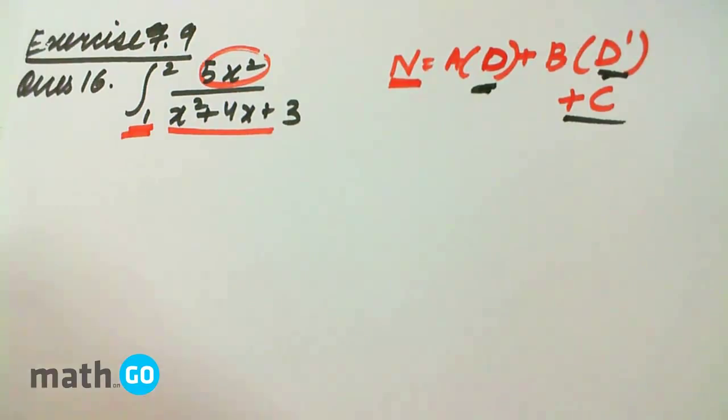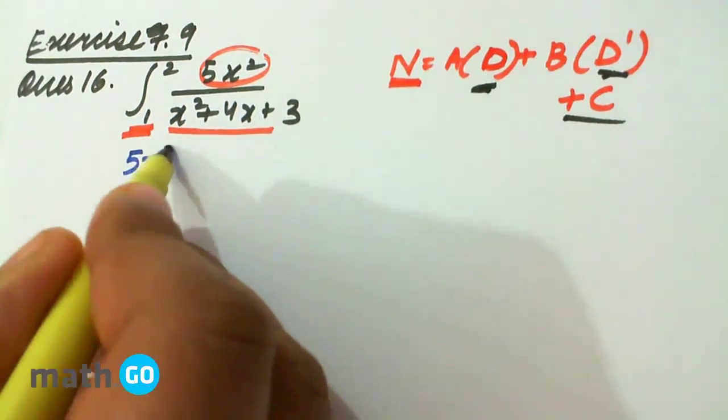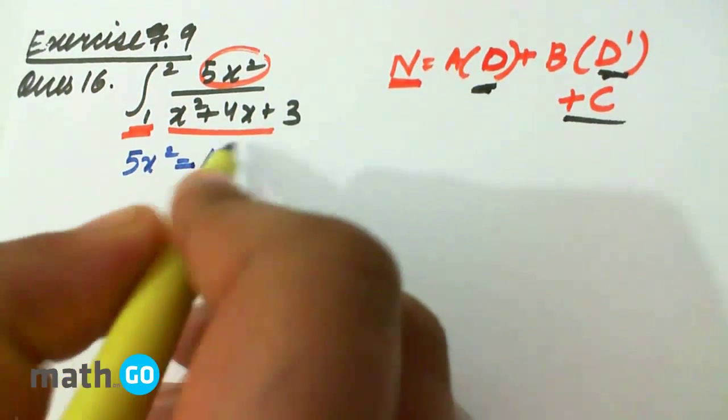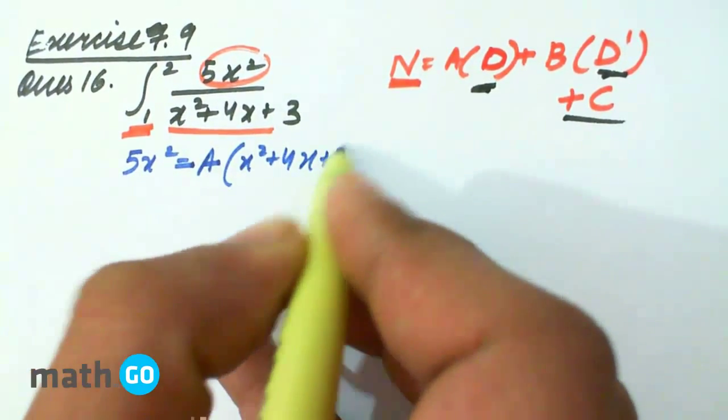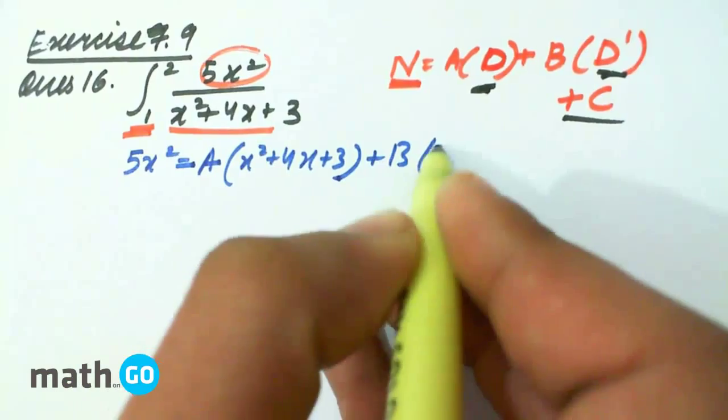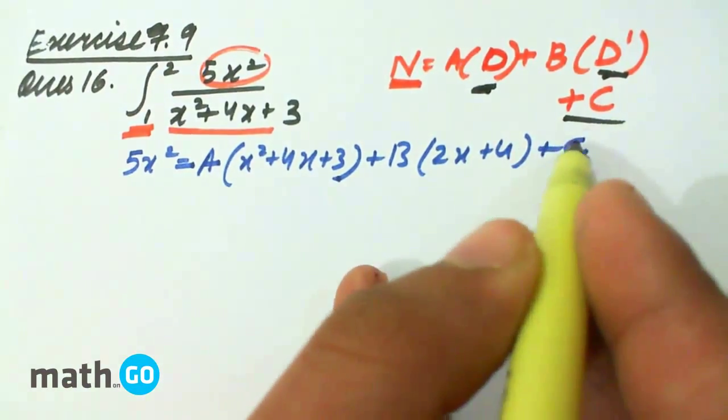So doing this we get 5x² equals A into x² plus 4x plus 3, plus B into 2x plus 4, plus C.